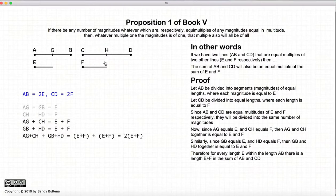So AG plus CH plus GB plus HD is going to be equal to CD. So AB plus CD is going to be equal to twice EF. And they started off as twice EF.